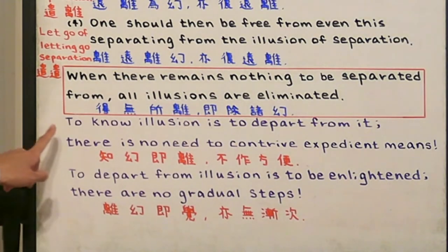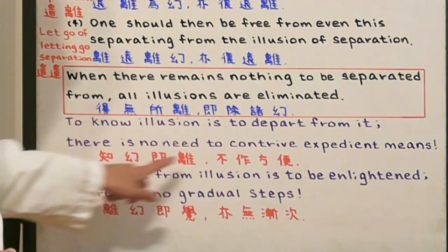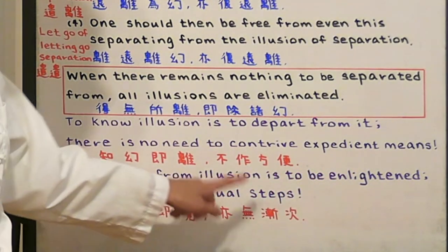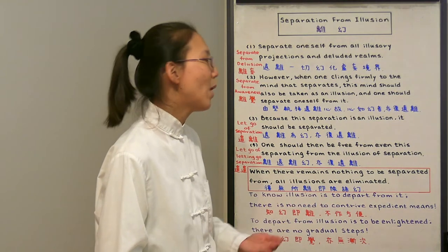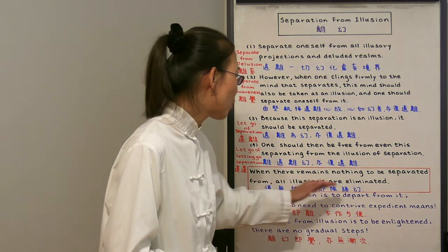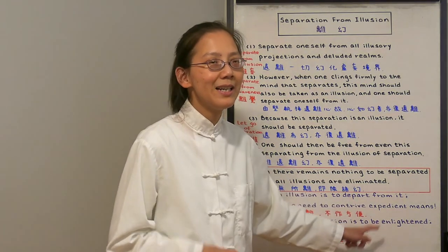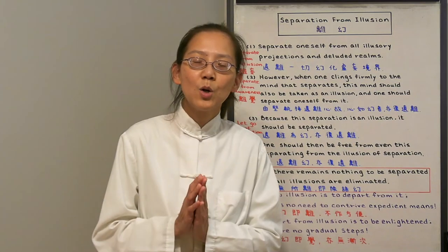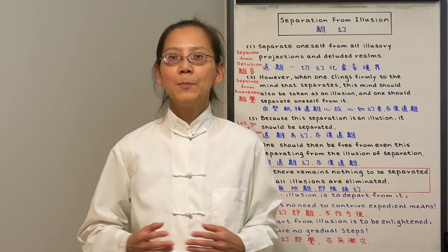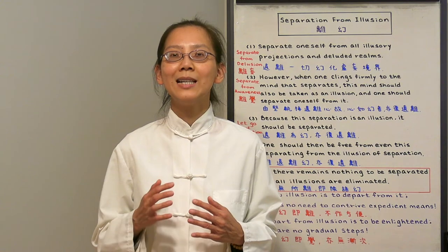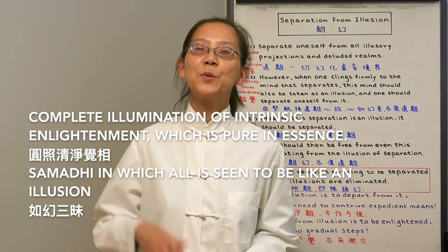In conclusion, to know illusion is to depart from it. There is no need to contrive expedient means. To depart from illusion is to be enlightened — there are no gradual steps. We just have to know what is illusion; everything is illusion. There is no gradual steps or expedient means; we just have to depart from illusion, and that's perfect complete enlightenment. All we have to do is to know. This is a certain teaching of Mahayana Buddhism, and this is where we should put all our attention, because this is the fastest and quickest way to enlightenment. This enlightenment is called the complete elimination of illusion — intrinsic enlightenment which is pure in essence.